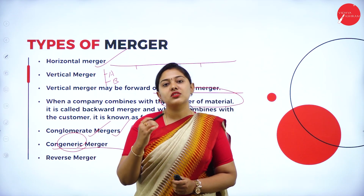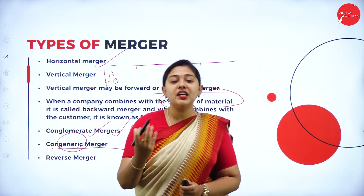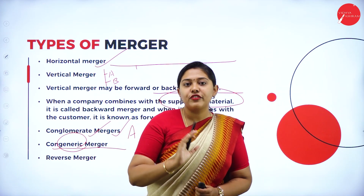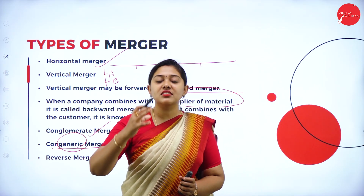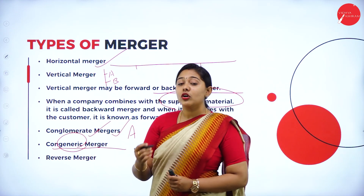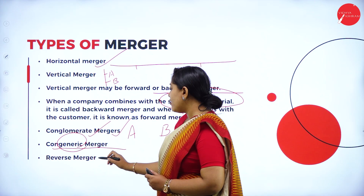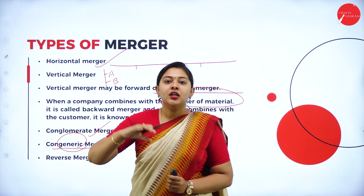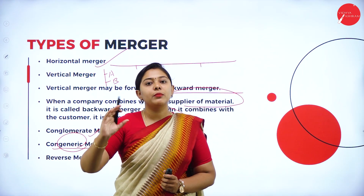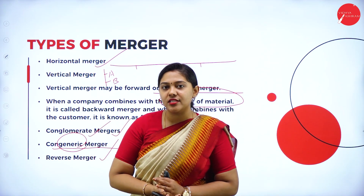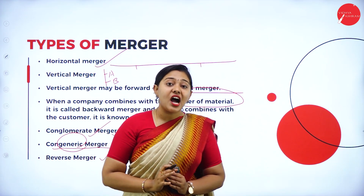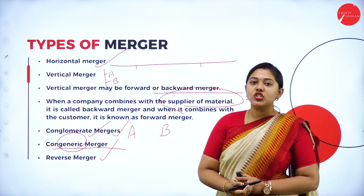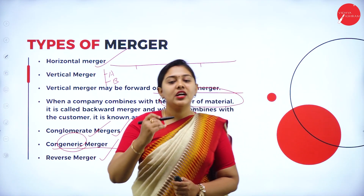In a congeneric merger, both companies are into similar industry and similar production activity, but their product or business line is different — they cater to different products. Finally, reverse merger: when a private company merges with a public company, or when a small-scale industry merges with a large-scale industry, it is called a reverse merger. These are all the different types of mergers to study for your examination.